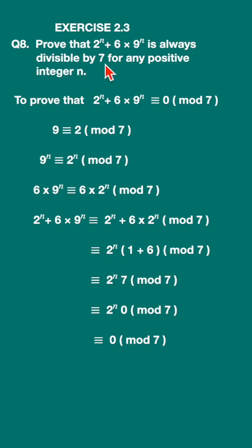If it is divisible by 7 means that it leaves a remainder 0. Let us now write this down in congruence modulo form. This when divided by 7 leaves a remainder 0. So here we have to prove that 2 raised to n plus 6 into 9 raised to n congruence 0 modulo 7. What this means is when you divide this number by 7 it leaves a remainder 0. This is what we have to prove.